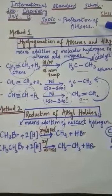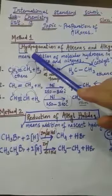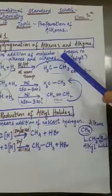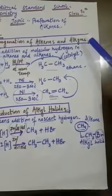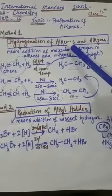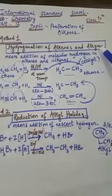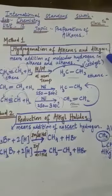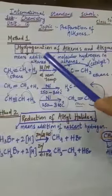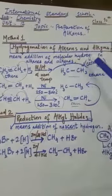Method number one, that is hydrogenation of alkenes and alkynes. You know that alkenes are the hydrocarbons having double bond, and alkynes are the hydrocarbons that have triple bond. Hydrogenation means addition of molecular hydrogen in alkenes and alkynes.